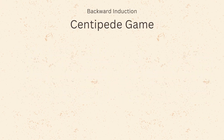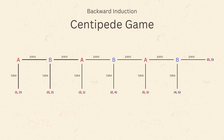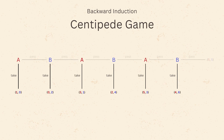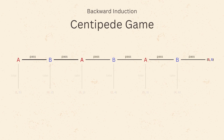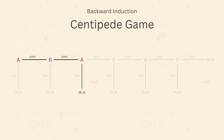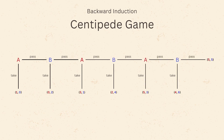Here is an example of how to use backward induction to solve a finite game using the centipede game. Two players A and B alternately get a chance to take the larger share of the accumulated money, or pass it to the other player. Starting from the first player A, they can either take one or pass it to B, hoping that B will also pass, so that A can take more than one, and so on. Each time they pass it, the sum of money increases.